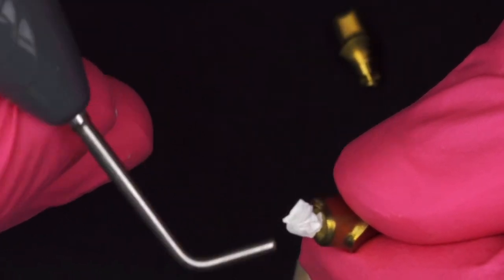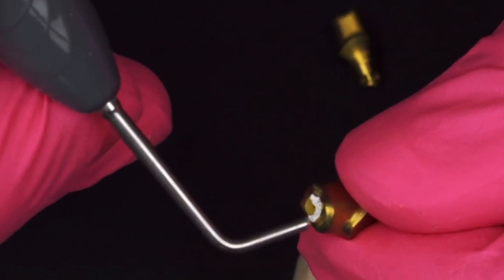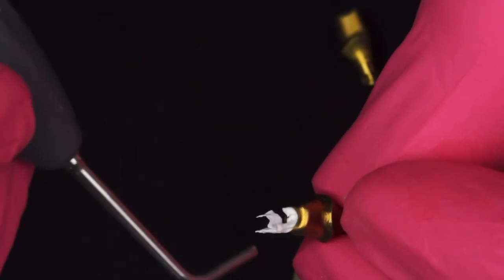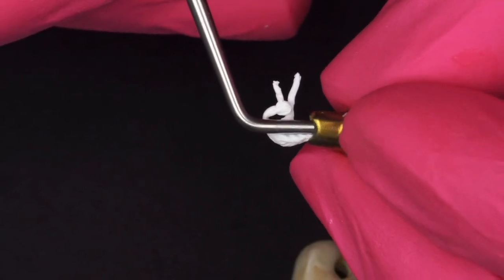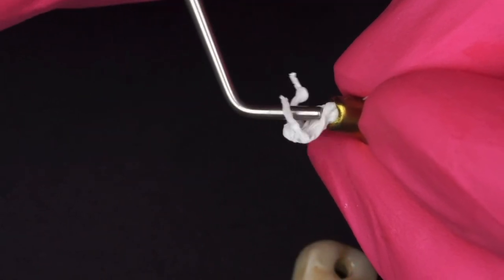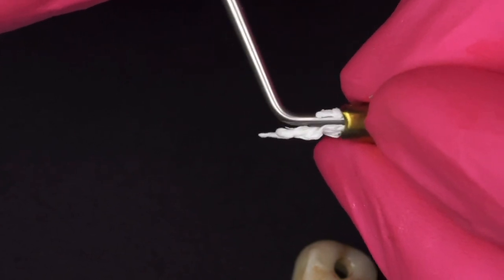Next step is to finagle some teflon tape in the access hole. I don't quite have enough here, but you want to make sure you pack it in tight. It's essential that you don't get resin down into the chamber of your abutment that could interfere with the way that the screw fits inside and could cause unnecessary friction.